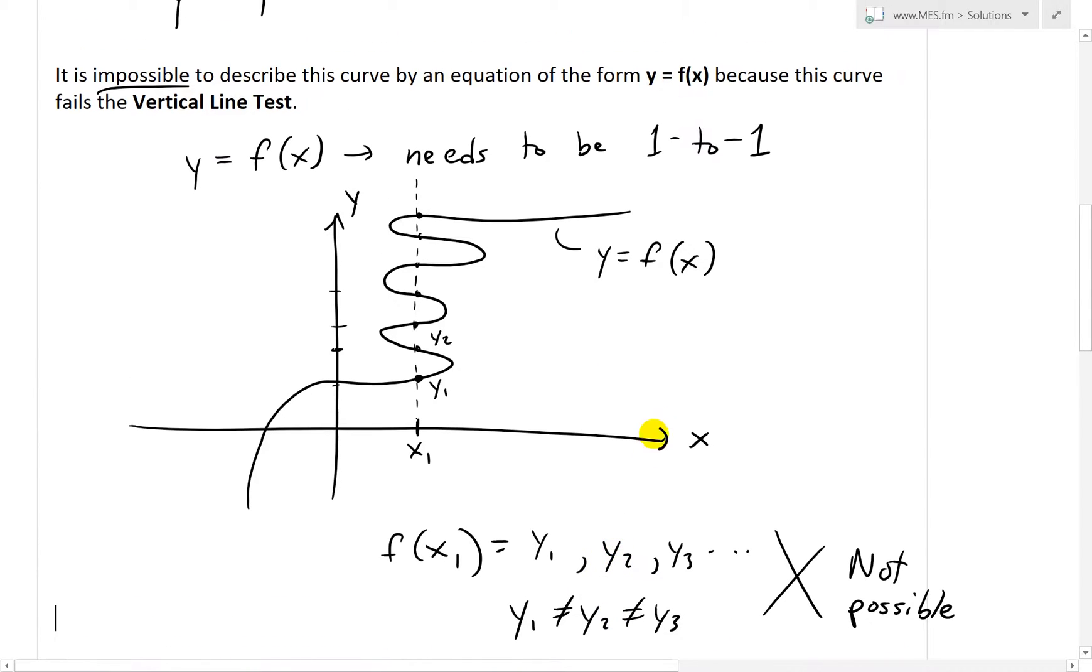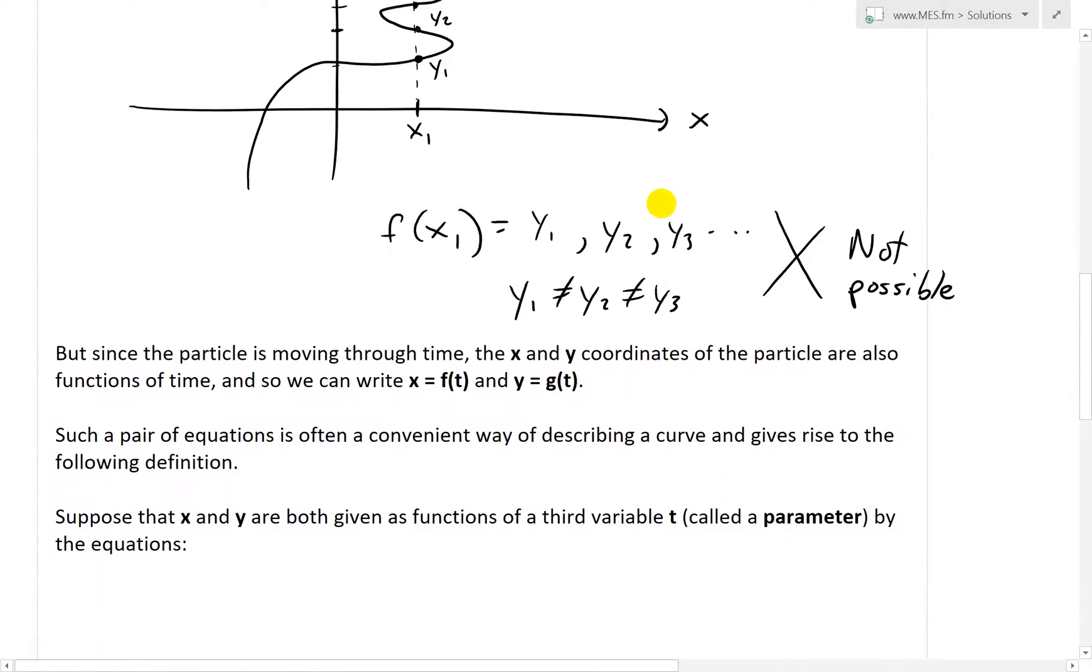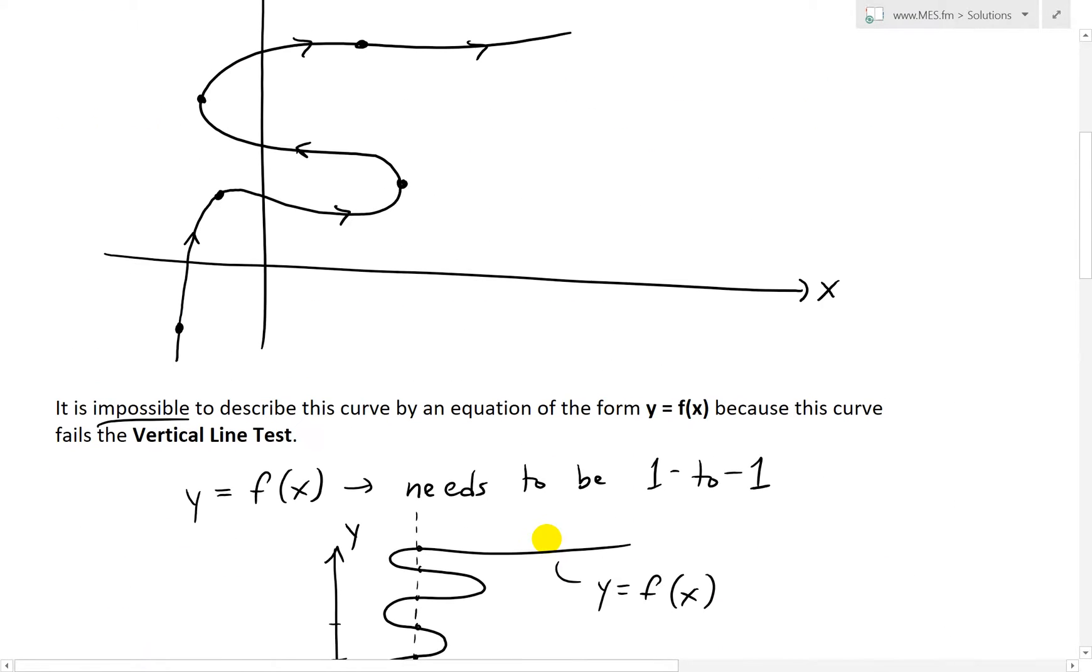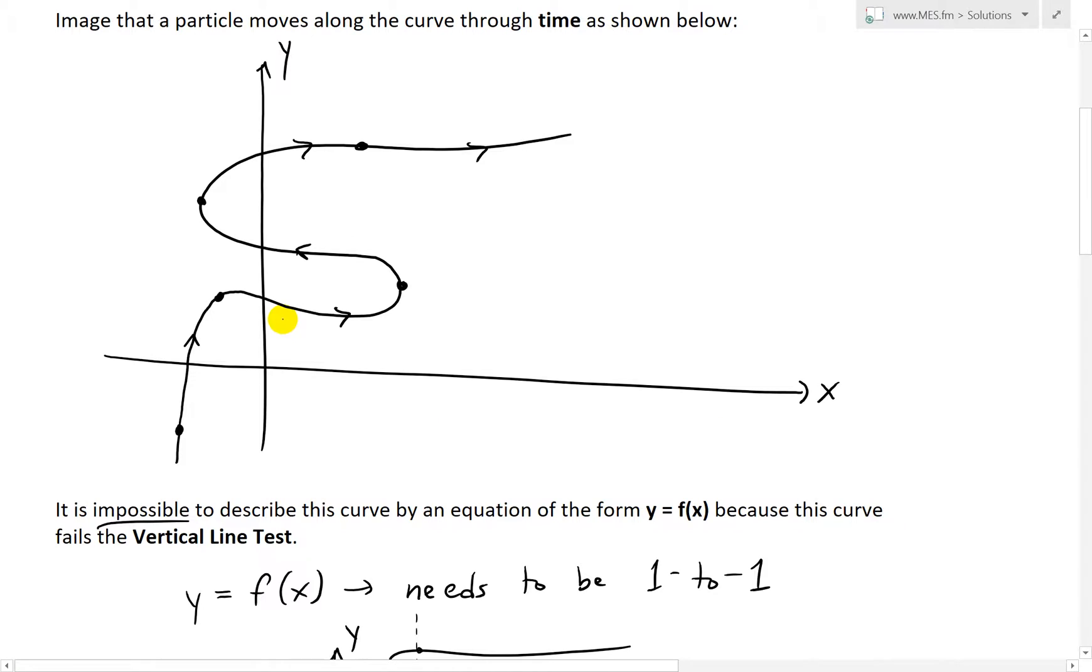But even though we can't graph it using this general y equals f(x) form, what we know is that since the particle is moving through time, the x and y coordinates of the particle are also functions of time. For example, at this point here, let's say at this point, if we call this t0, that's initial time, we call this t1.